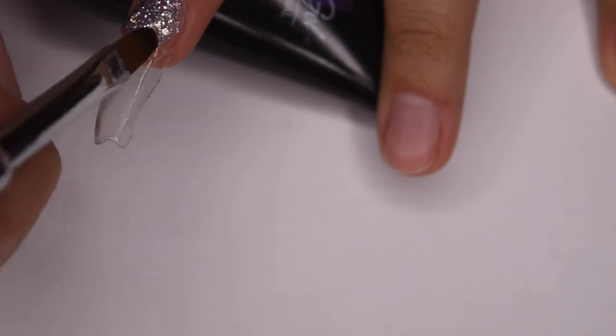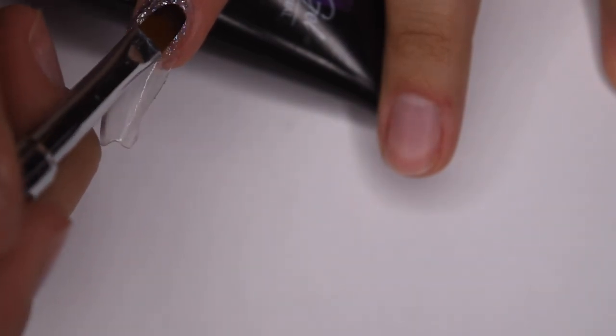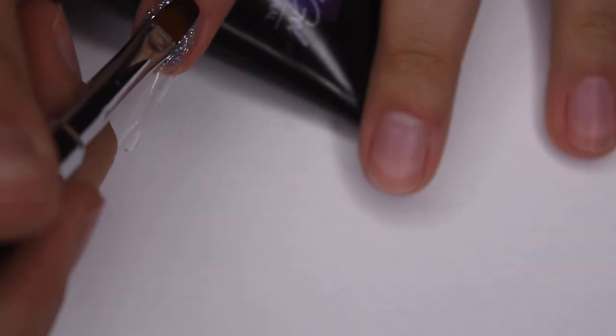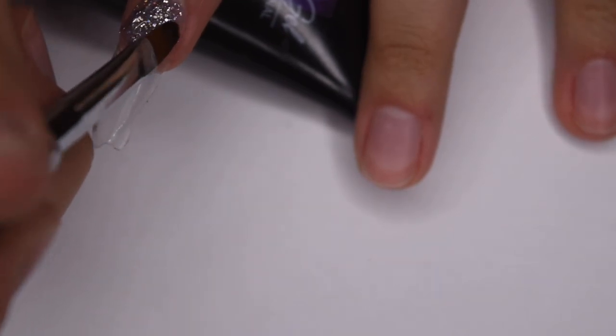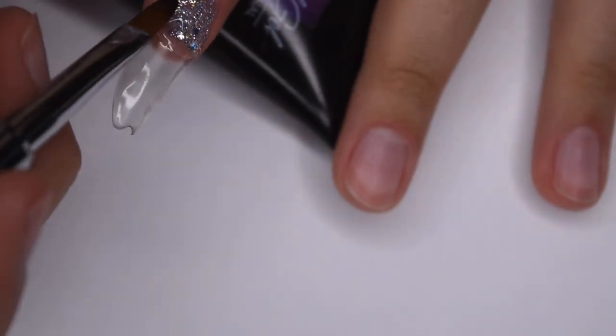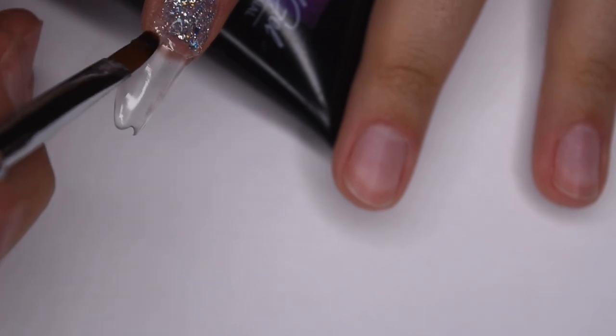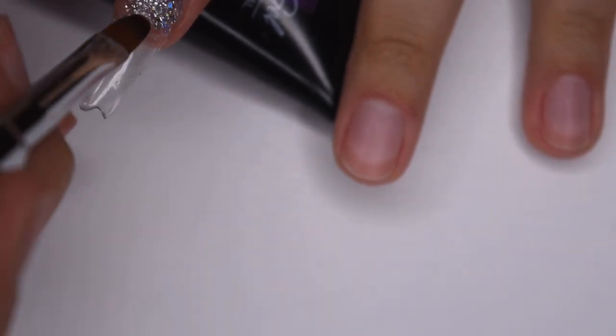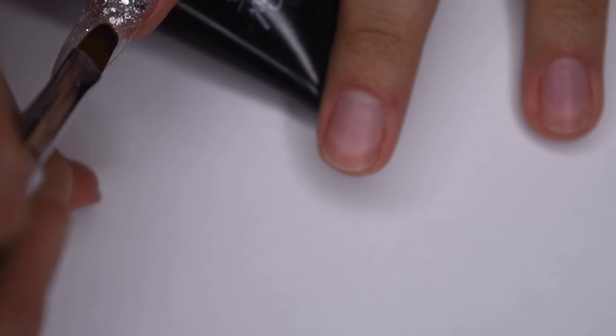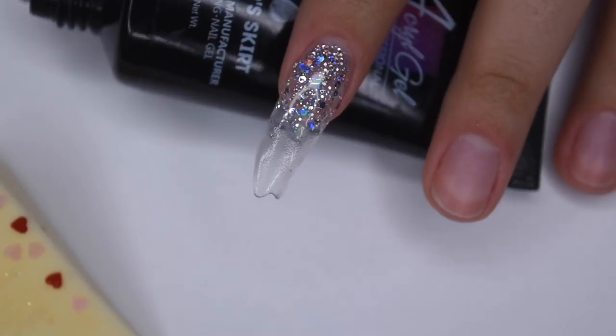And after I have put that into place, I'm going to take the tip of my brush and thinly spread out the glitter towards the tip, which will give a gradient effect. And the main reason I did this was to hide the natural nail and also give the nail a little bit more sparkle. And here is what that looks like with the gradient of glitter.